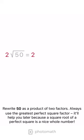Rewrite 50 as a product of two factors. Always use the greatest perfect square factor. It'll help you later because the square root of a perfect square is a nice whole number.